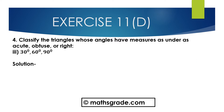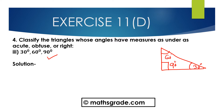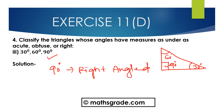Now question number 3rd part: 30 degrees, 60 degrees, and 90 degrees. In this triangle, one of the angles is 90 degrees. We know any triangle which has one angle equal to 90 degrees is said to be a right angle triangle. So this is a right angle triangle.